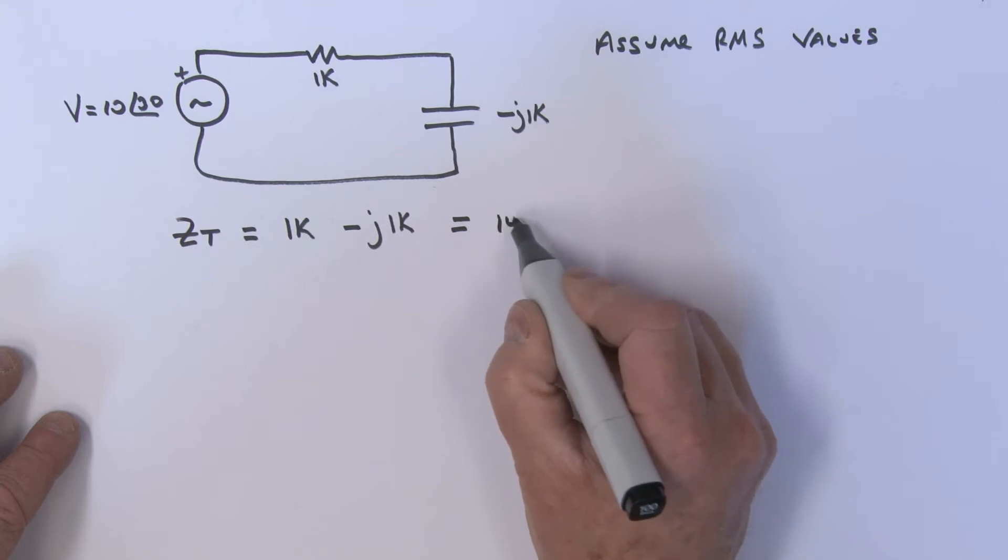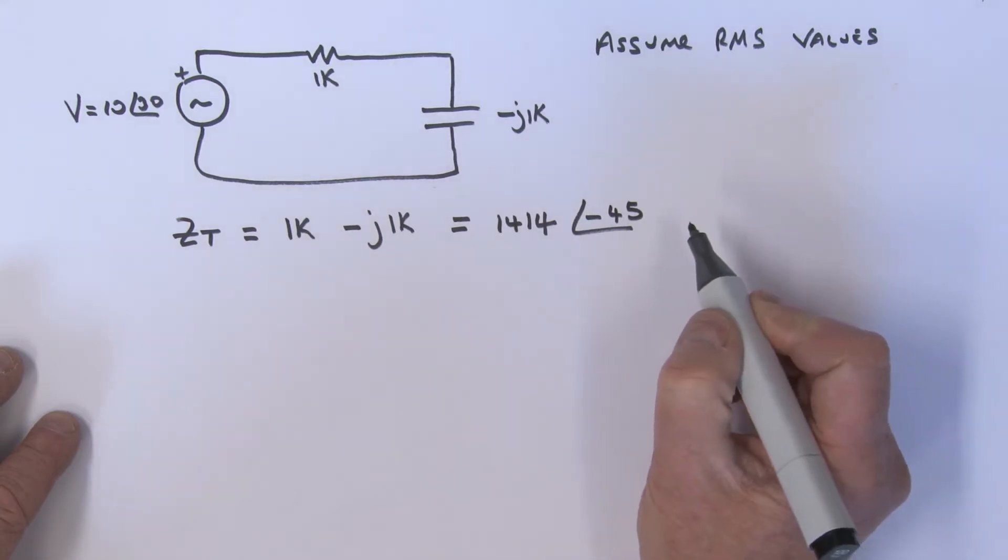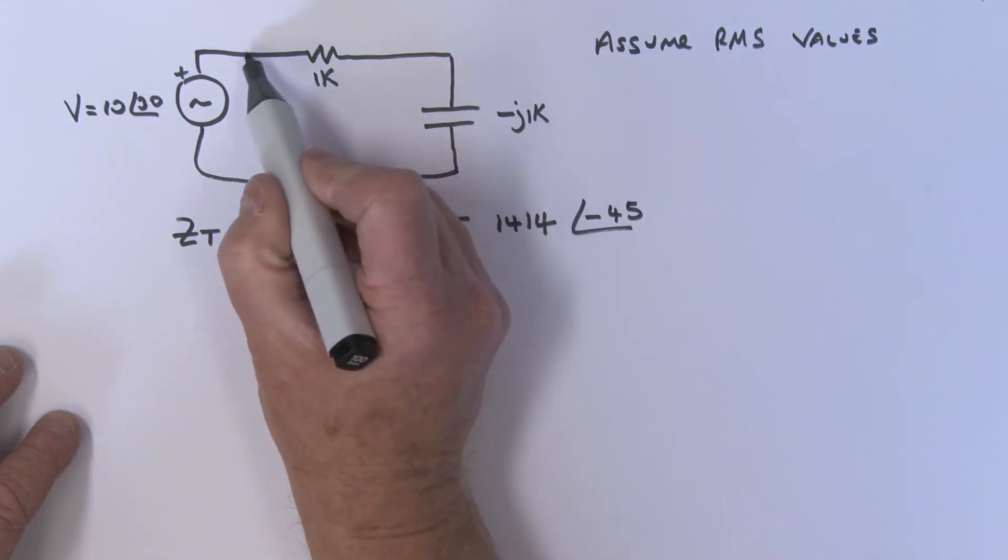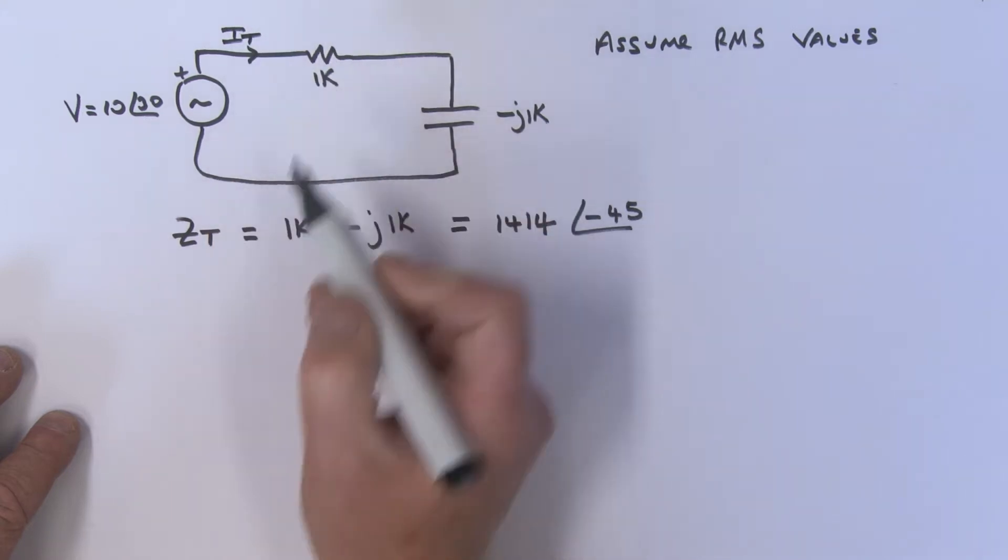Okay, having calculated ZT, we are now able to actually calculate the current in this circuit. We can call that current IT.